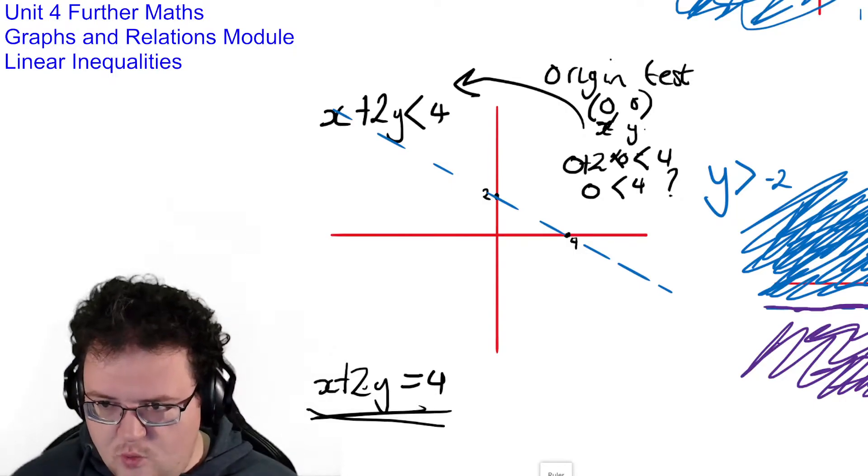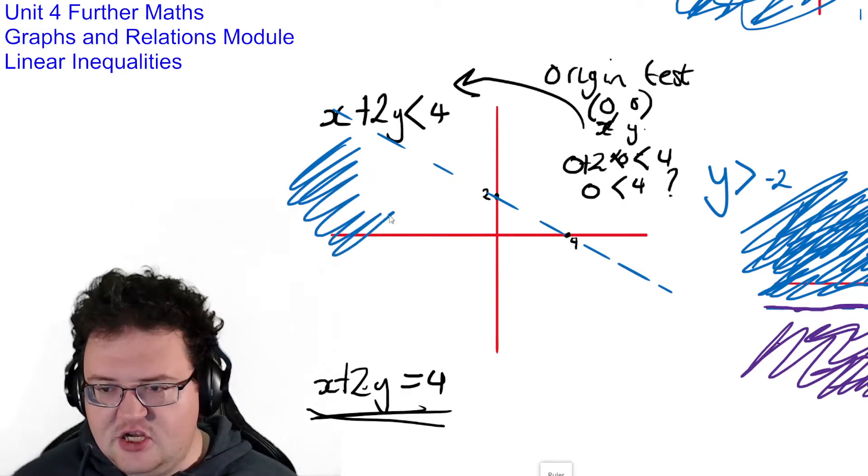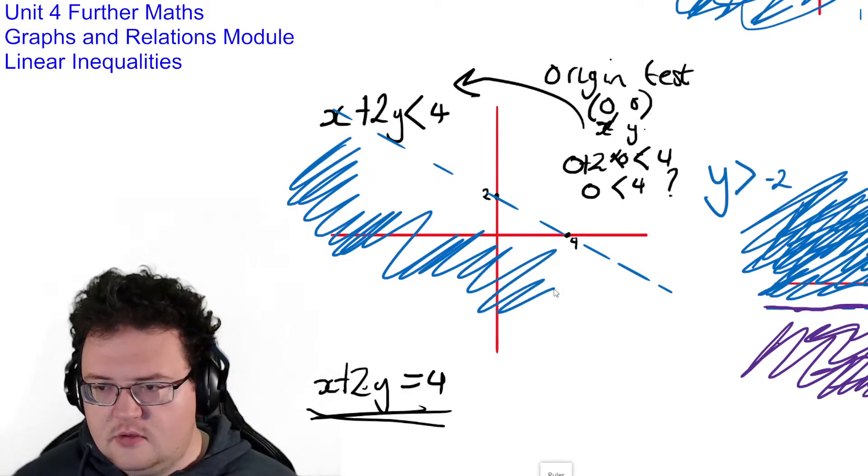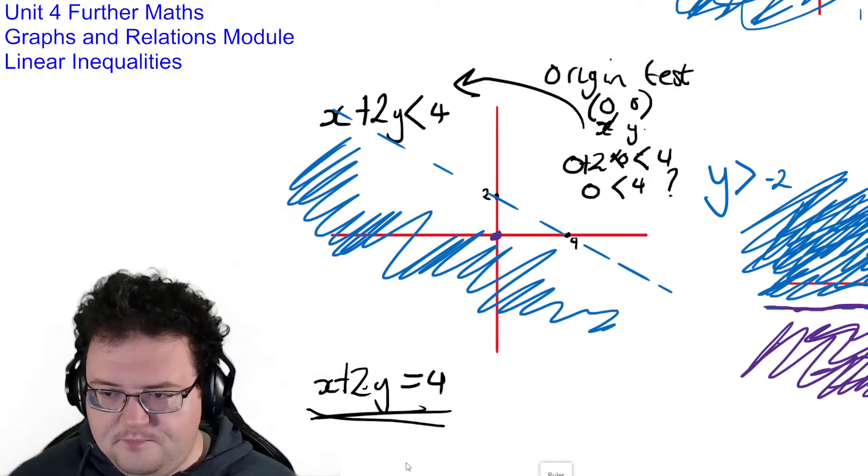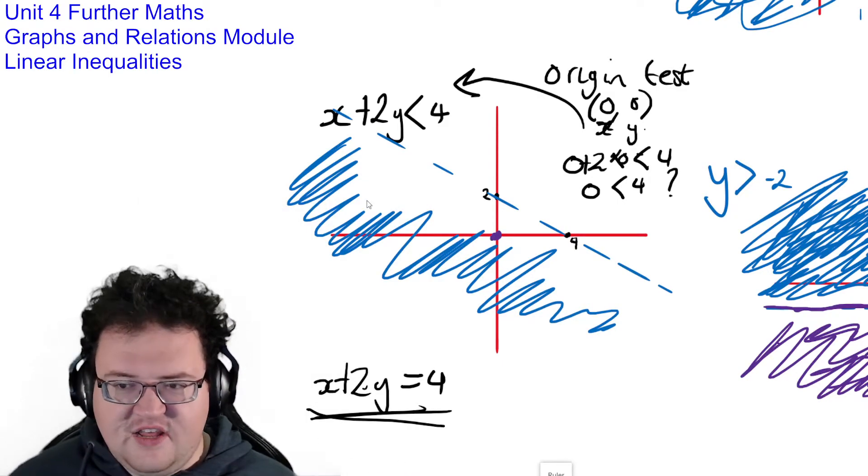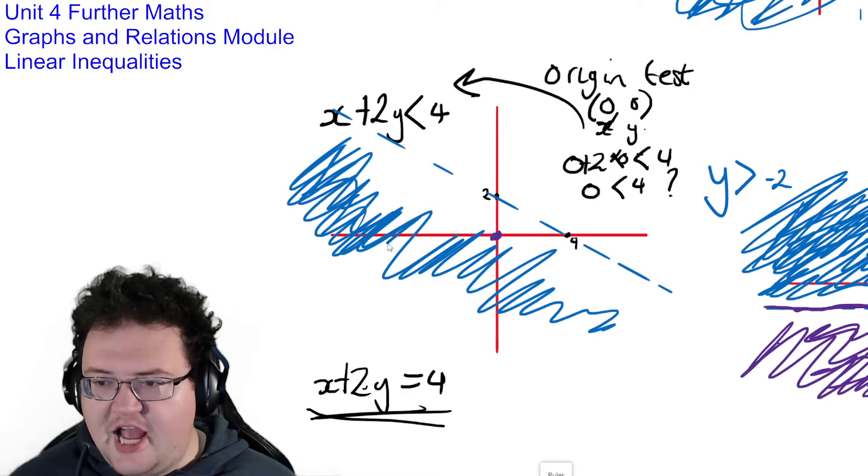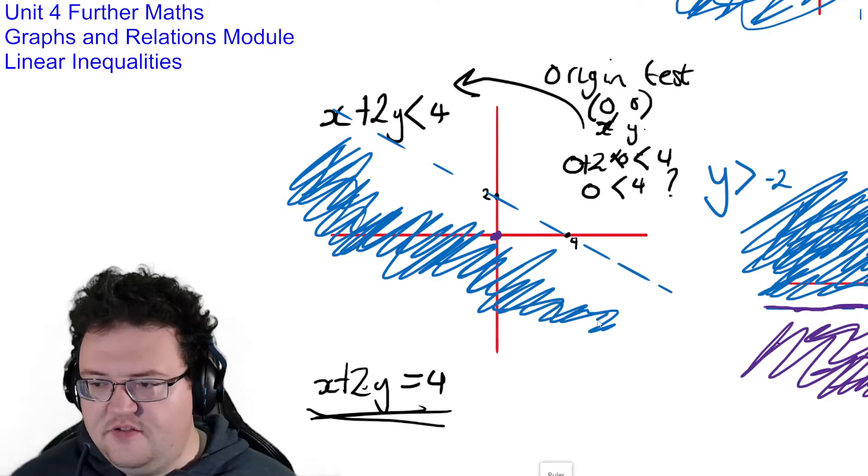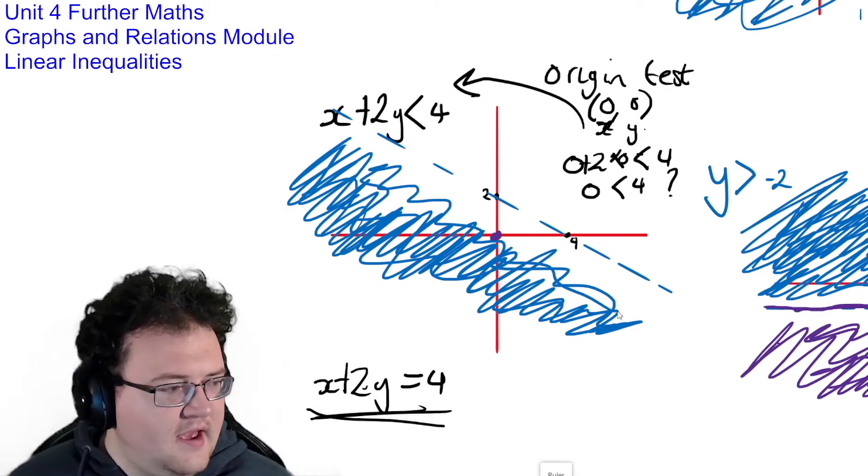If that is true, then we shade the side of things that include 0, 0. Because remember, there is 0, 0. So in our inequality, if 0, 0 is present, then we can shade any side of the line that has our friend 0, 0.